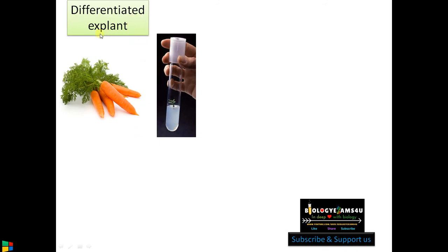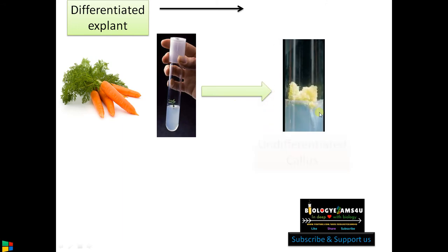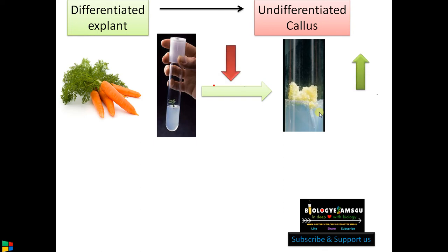After a week or two, the differentiated explant produces callus. Callus is undifferentiated, actively dividing meristematic cells formed in plant tissue culture. The formation of undifferentiated callus from differentiated explant is called de-differentiation.